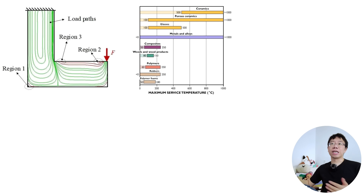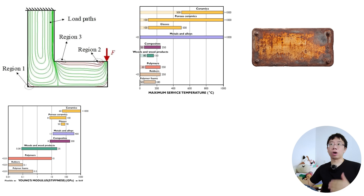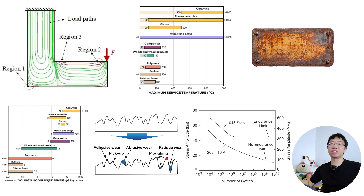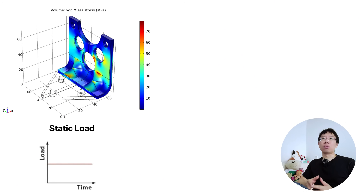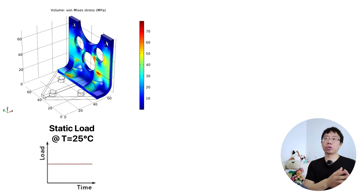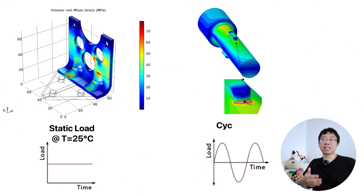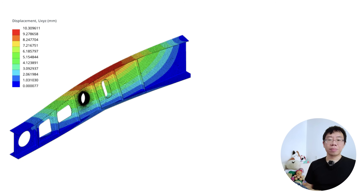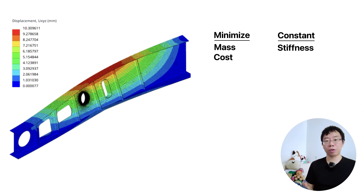In industry, mechanical engineers don't pick materials based on gut feeling. We use a systematic approach often referred to as the Ashby method. The process follows four distinct steps. Step one is translation: you must convert your design requirements into functional constraints by asking what must the part do. Load paths, operating temperatures, environmental exposure, stiffness targets, wear conditions, and lifespan define the acceptable design space. A bracket that sees static load at room temperature invites very different material choices than a rotating shaft exposed to cyclic stress at elevated temperature. If you're designing a beam, is your goal to minimize mass or to minimize cost for a given stiffness? These are two different mathematical problems.